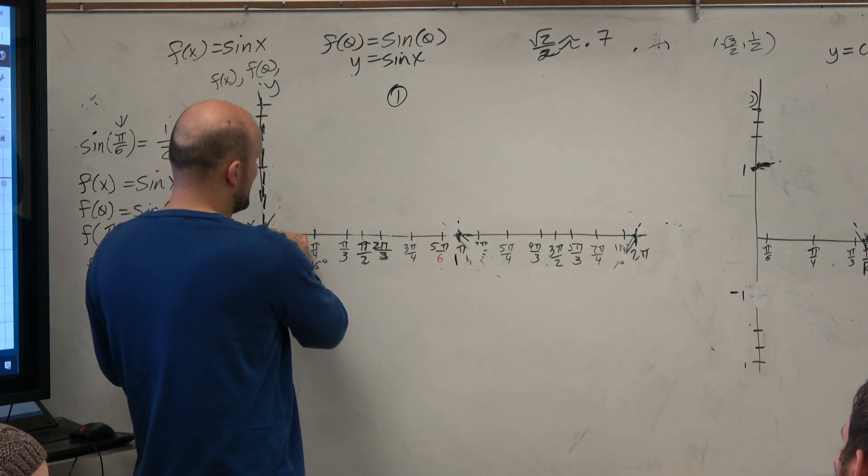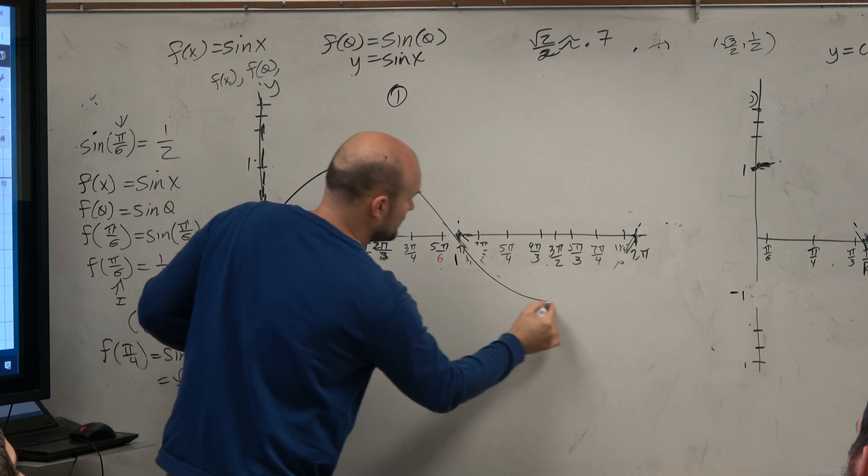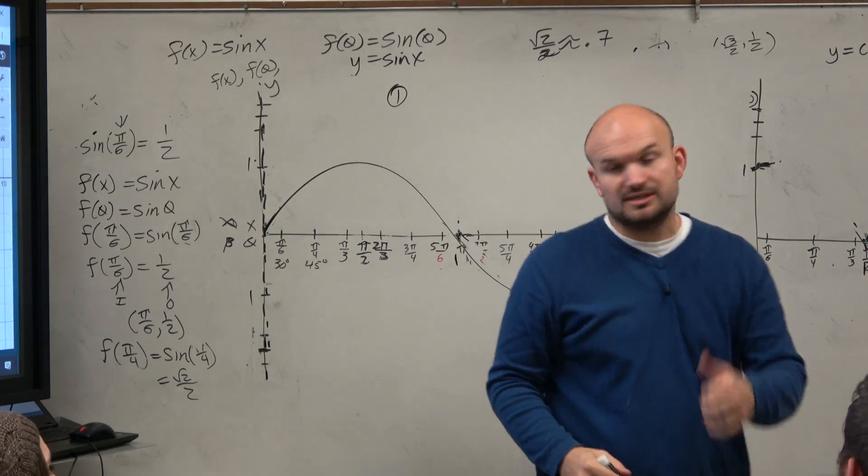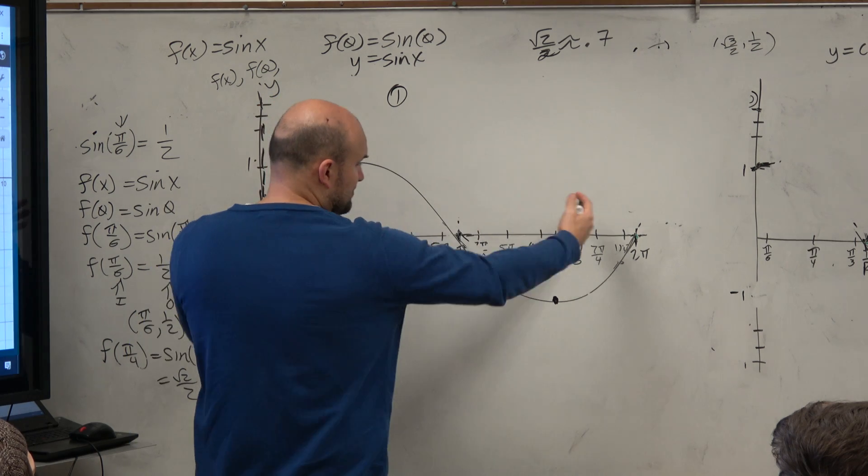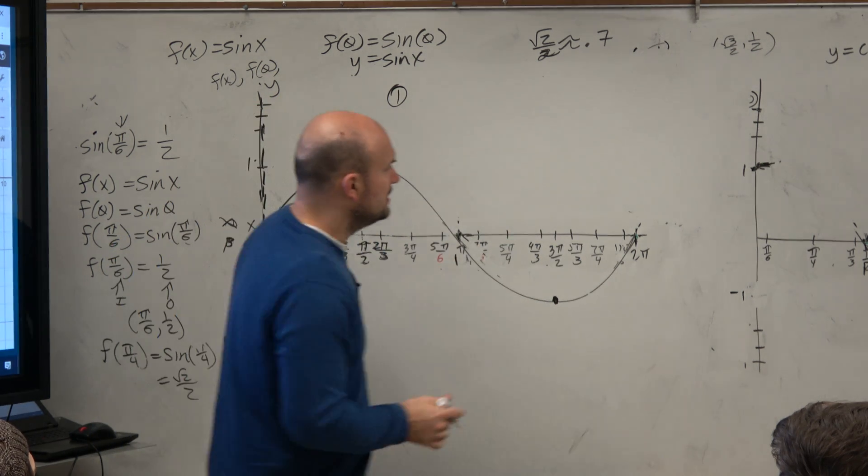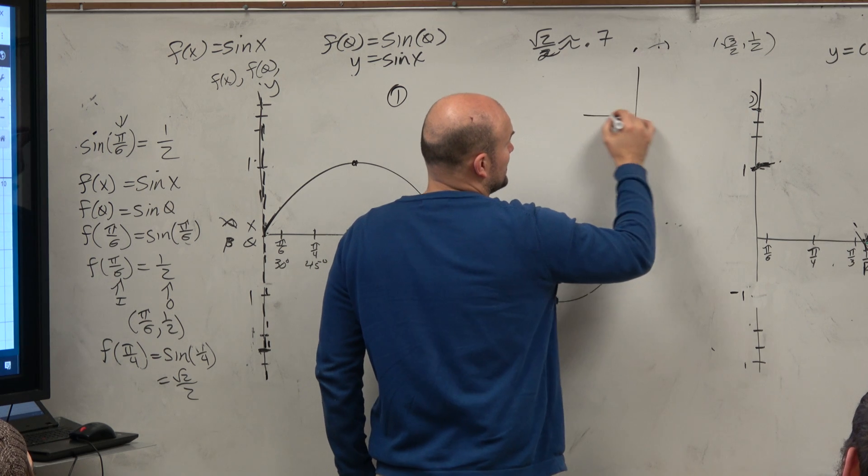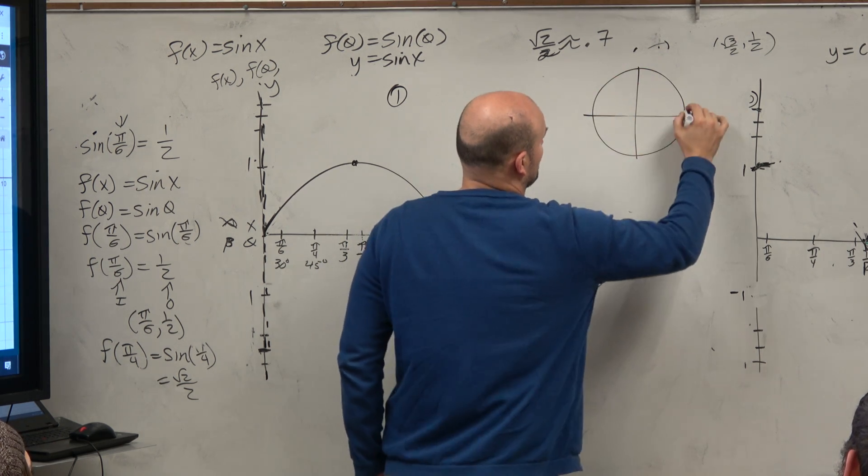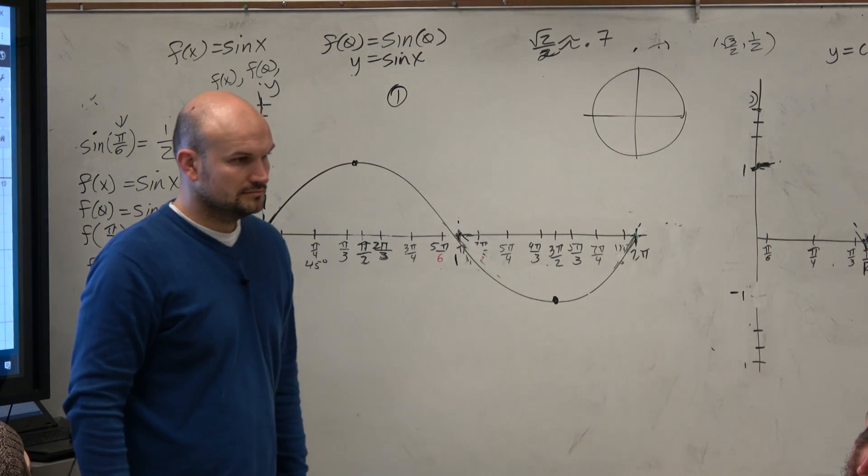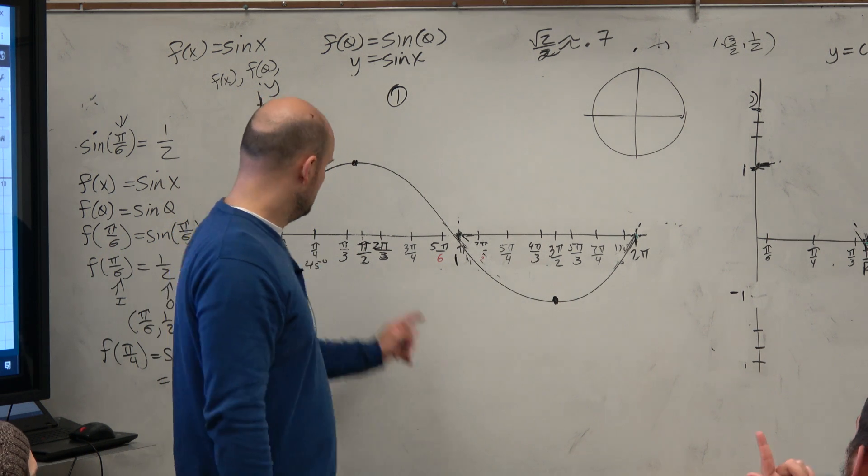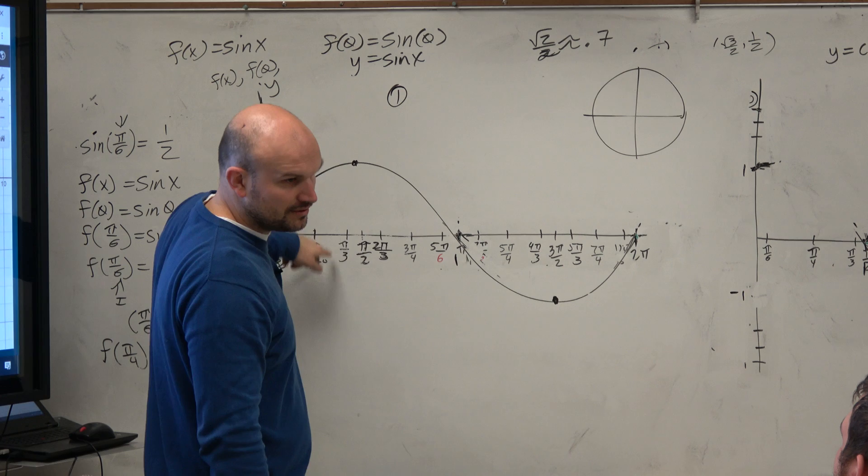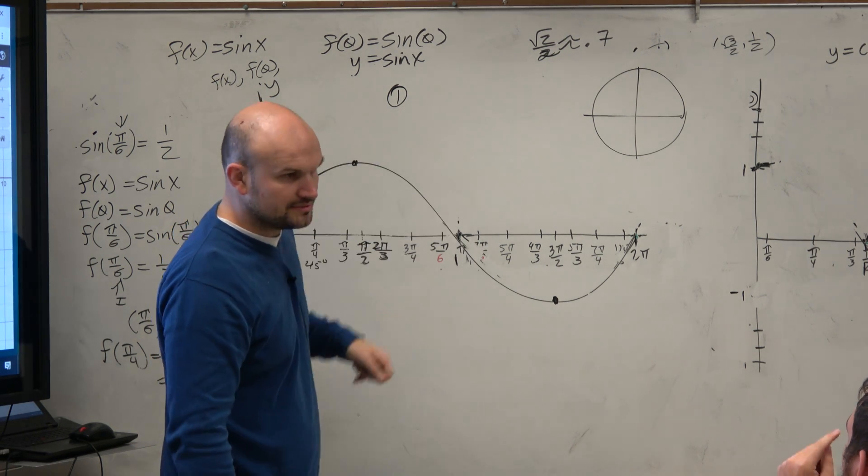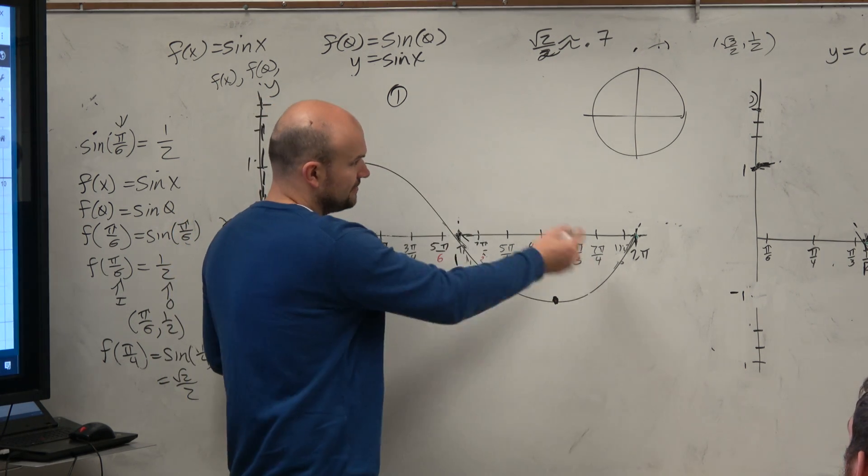So I changed this from 1 to negative 1. Let's graph the sine graph. And hopefully you guys agree that is what the sine graph looks like from negative 1 to 1 with a period of 2 pi. Now, again, we got these values by using points on the unit circle. That's what you missed. We did pi over 6, which is 1 half. Pi over 4, square root of 2 over 2. So that's what we did. We plotted all the points.